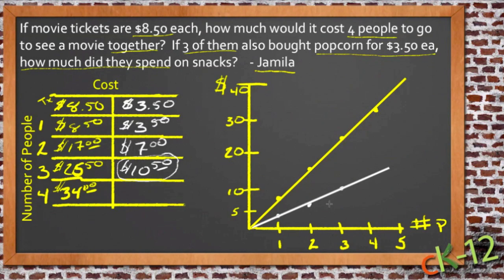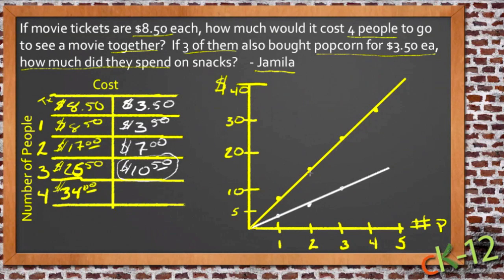If you caught the lesson on rate of change, you'll note that that's exactly what this is. These two lines represent the rate of change of dollars spent based on the number of people. You can also see that the line is steeper for things that cost more — the $8.50 tickets have a greater rate of change than the $3.50 popcorns.